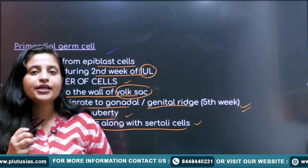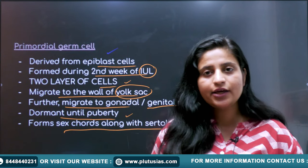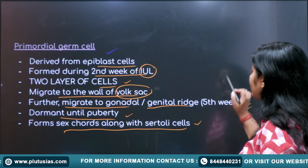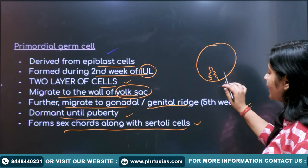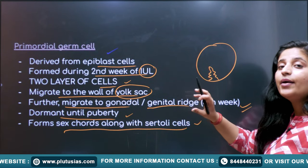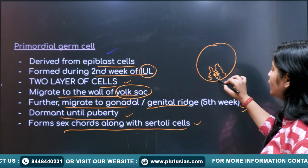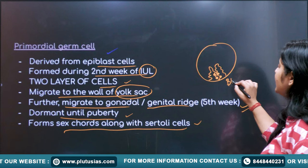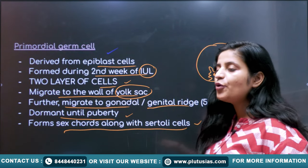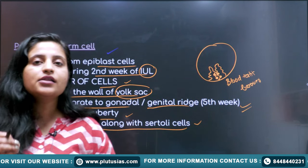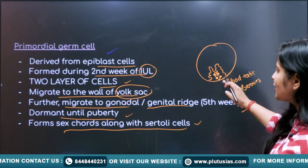The primordial germ cells are dormant until puberty, and they form sex cords along with the Sertoli cells. When a male baby is in his mother's womb, the primordial germ cells are dormant - even after birth they are not activated. When the male attains puberty, they become active. The sex cords do not have any lumen. At puberty, under the influence of hormones like gonadotropin-releasing hormone, luminization of the seminiferous tubules occurs, and this stimulates the primordial germ cells - also called spermatogonia stem cells.